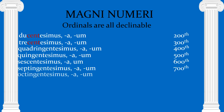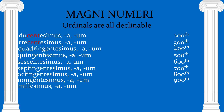You should always look to see what the core number is. So when you get to nongentesimus, while it looks long and daunting, you should know that nine can be shown as non- or nom-, there's your -gent-, and that ending is basically your -th. So this is nine hundredth. And millesimus, millesimam, millesimum is one thousandth.